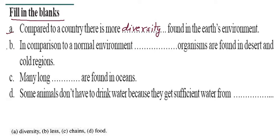Now the first is completed. For the second: in comparison to a normal environment, fewer organisms are found in the desert and cold regions. So that answer is: less. You have to put less. Now, many long food chains are found in the ocean — so that answer is: chains.